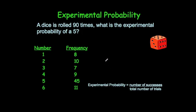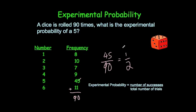So the experimental probability of a 5 is equal to 45 over, and it's rolled 90 times, so 90. If you didn't know that you would just add up the frequencies. You just cancel this down, divide both of them by 45, you'd get a half. That means that the experimental probability, or relative frequency of a 5, is equal to a half.